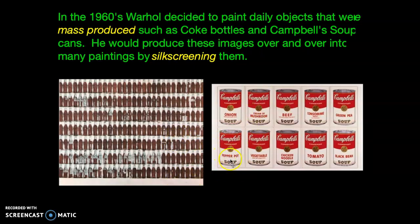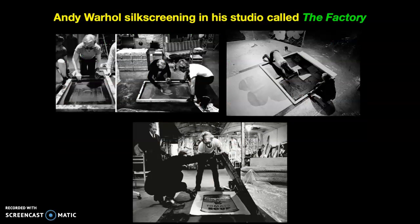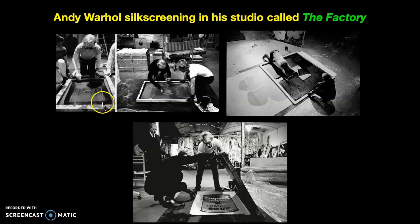With silk screening, it almost looks like a photograph. You can get a really hard edge and you don't even see the paint — it kind of looks like a machine made them, and that was his intention. He wanted it to look like a machine. His studio was even called the Factory, which again reflects the idea of things that are mass produced.